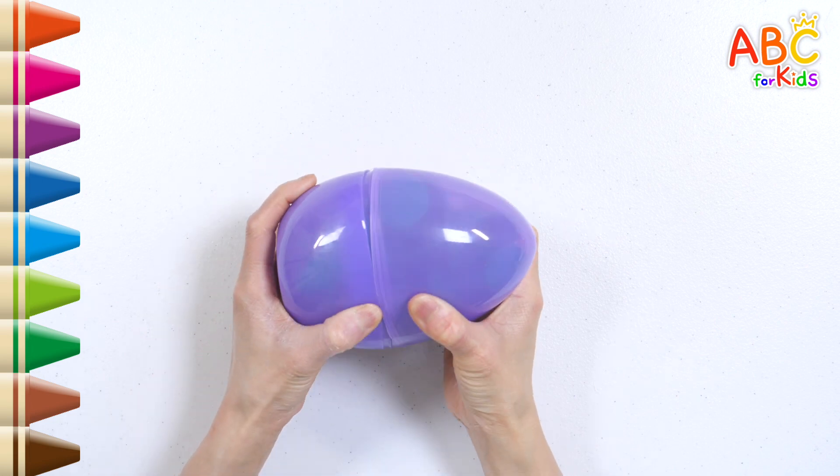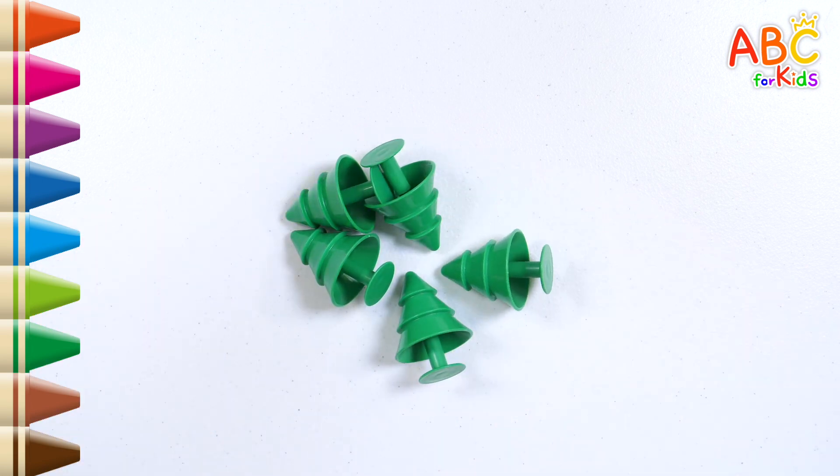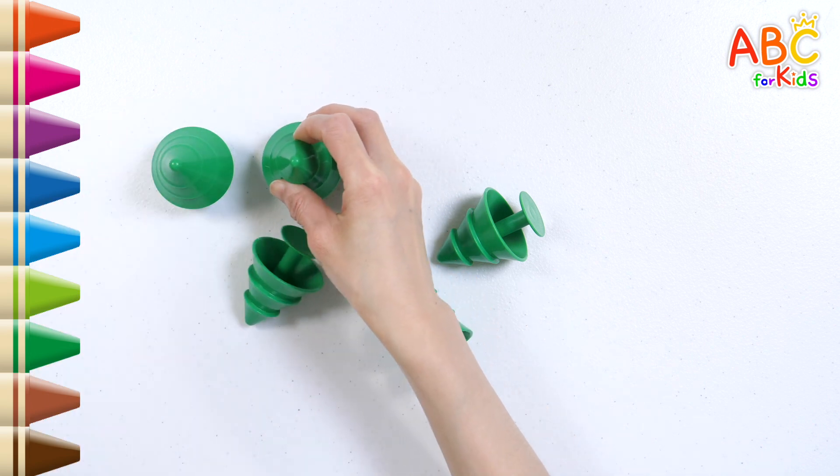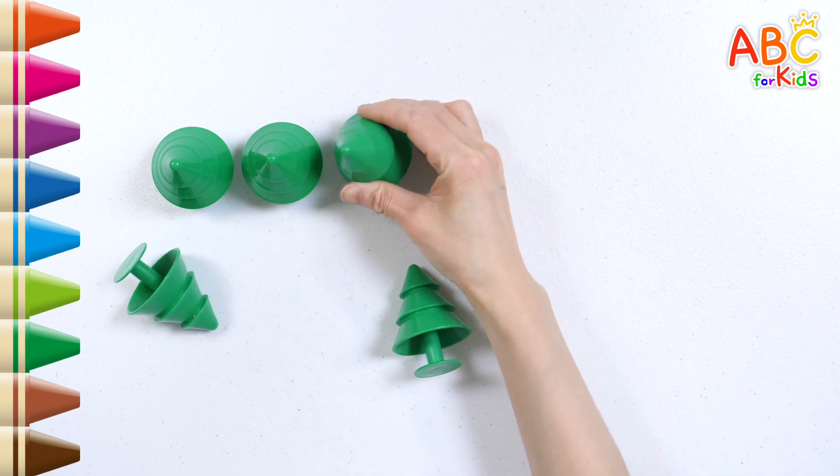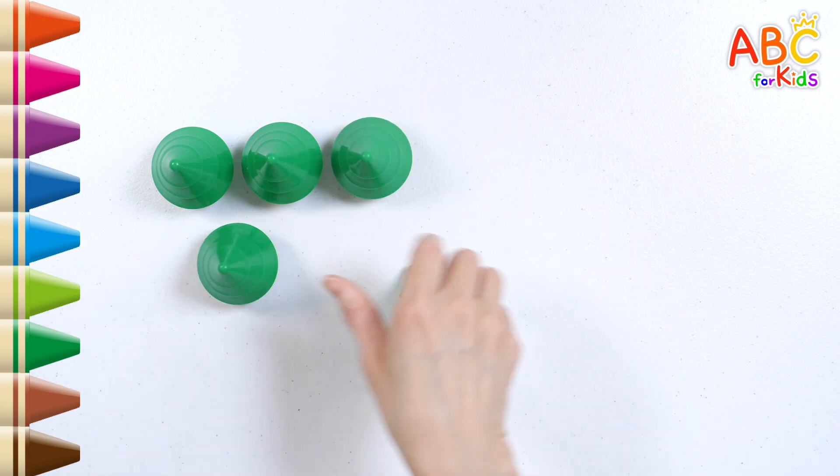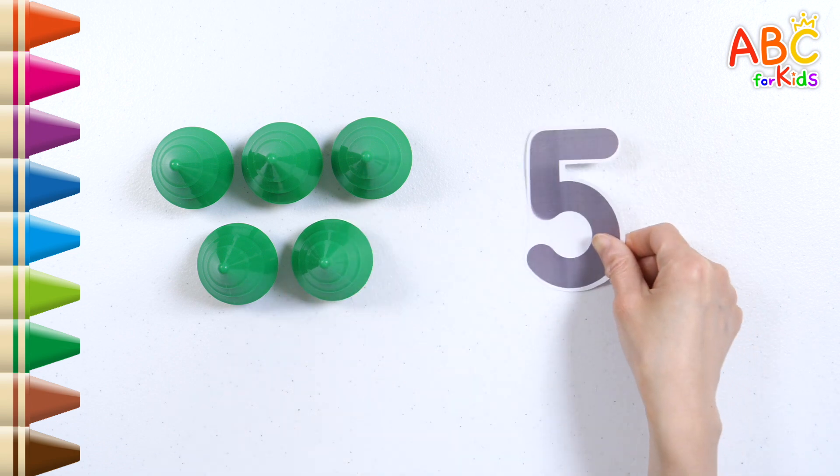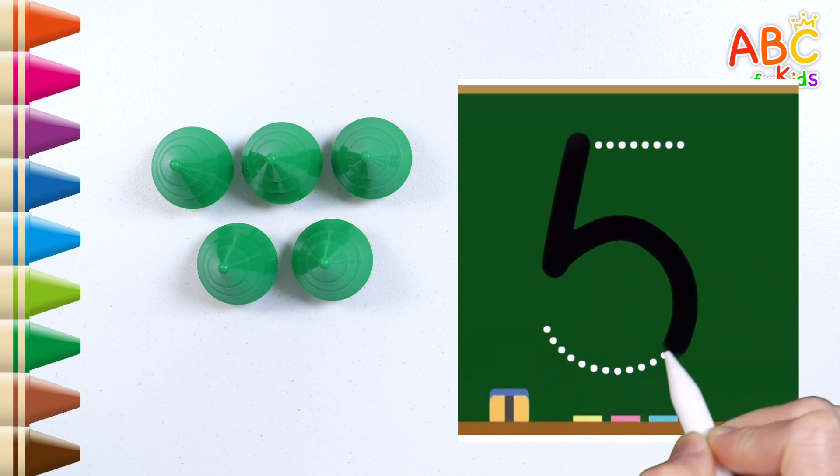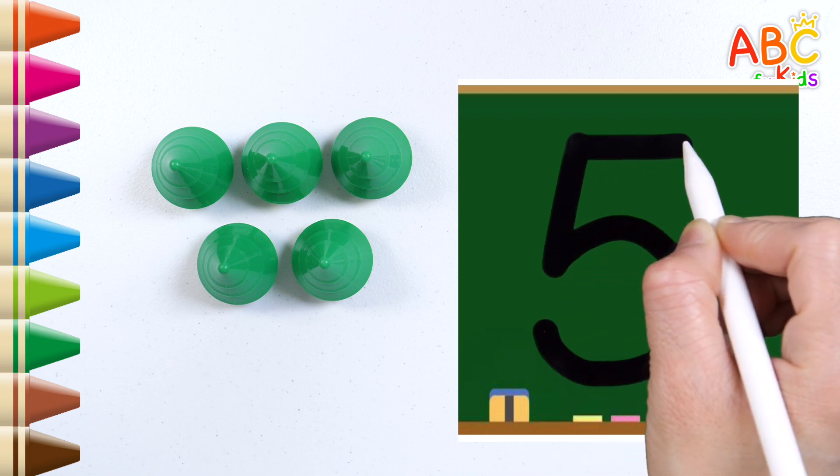What's in it? It's a tree. Let's count how many. One, two, three, four, five. Five trees in all. Let's write the number. Five.